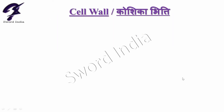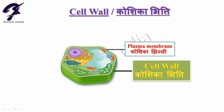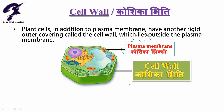First, understand what is cell wall. You see a plant cell here, and this is the plasma membrane — the inner membrane is called the plasma membrane. Plant cells, in addition to the plasma membrane, have another rigid outer covering called the cell wall, which lies outside the plasma membrane. Just outside of the plasma membrane, there is another layer — this is called the cell wall.